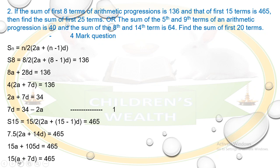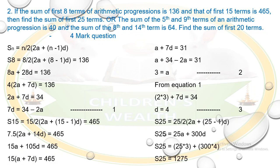Simplifying: 15 × (a + 7d) = 465, so a + 7d = 31. Substituting 7d = 34 - 2a from Equation 1: a + (34 - 2a) = 31, which gives us a = 3.